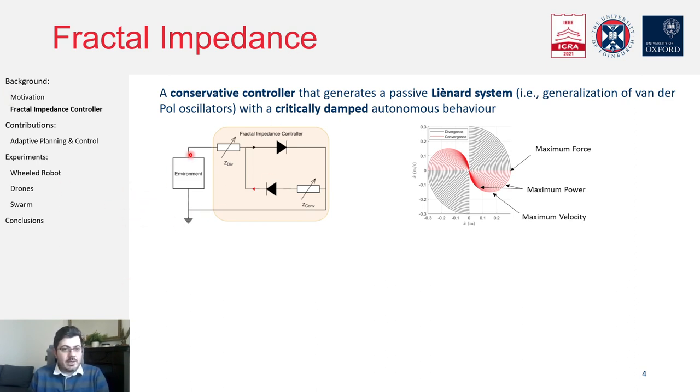We can see in the schematic that when the system is absorbing energy from the environment, the only engaged impedance is this one and it behaves like any other impedance controller. However, when the system starts to introduce energy in the environment because there is a reduction in the perturbation and it starts to converge to the desired state, we engage an additional impedance. The function of this additional impedance is to take this energy, redistribute it in order to obtain this critically damped autonomous trajectory and go back to the desired state. It is worth noting these trajectories are harmonics, which implies that the maximum velocity is lower.